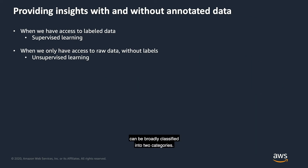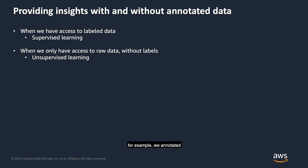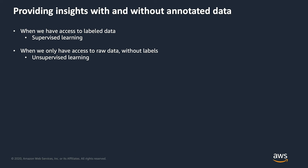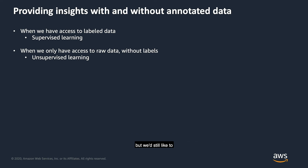Most machine learning algorithms can be broadly classified into two categories. If we already have labels for our data — for example, we annotate that some of our transactions are fraudulent and some are legitimate — we can use a supervised learning algorithm to discern the two. On the other hand, if we are only just starting out without any labeled data but would still like to flag potentially anomalous transactions, we can use unsupervised learning algorithms.